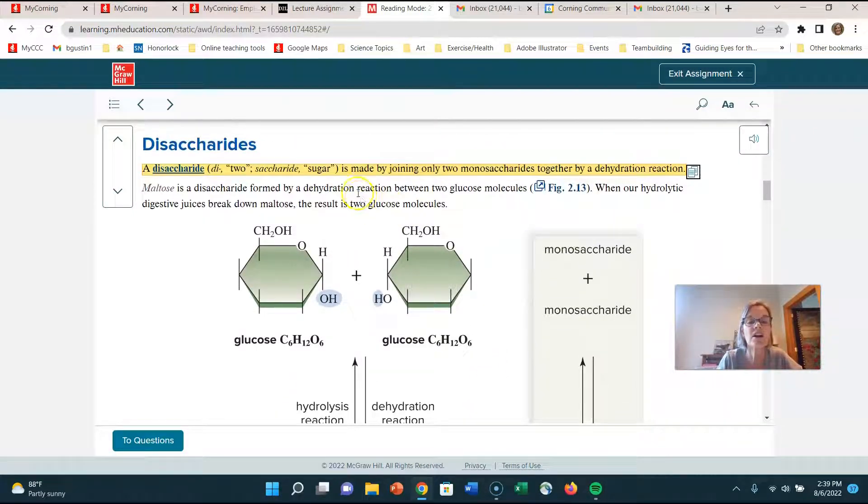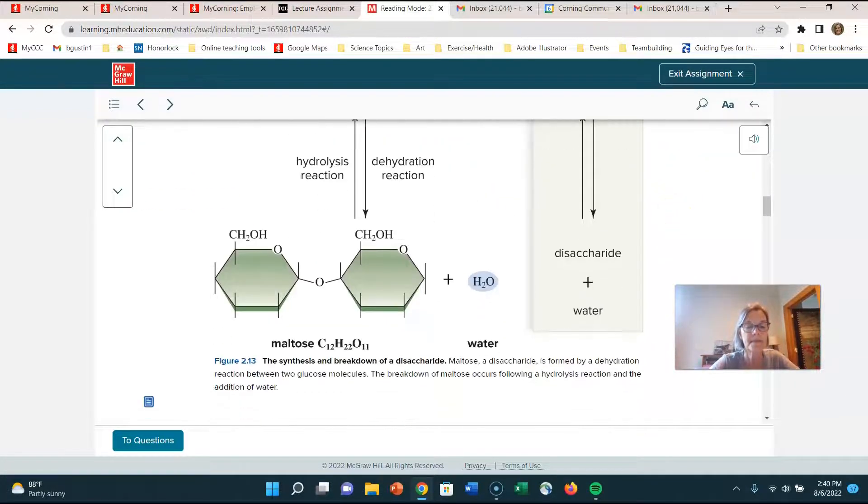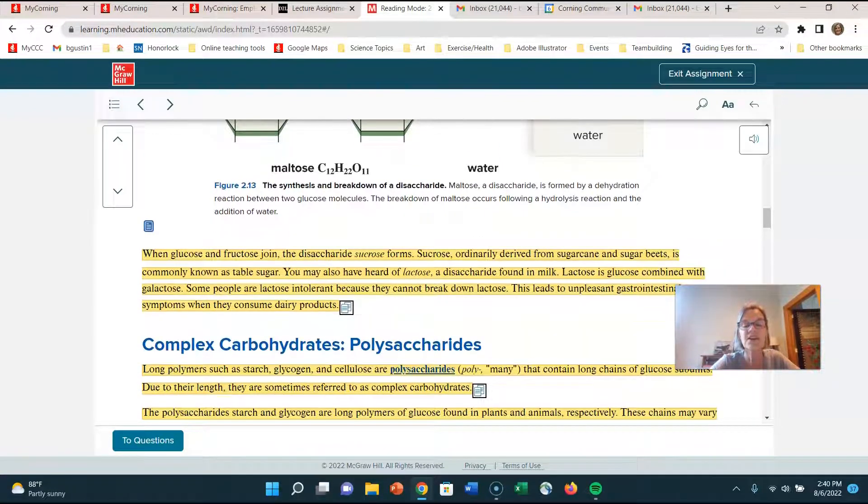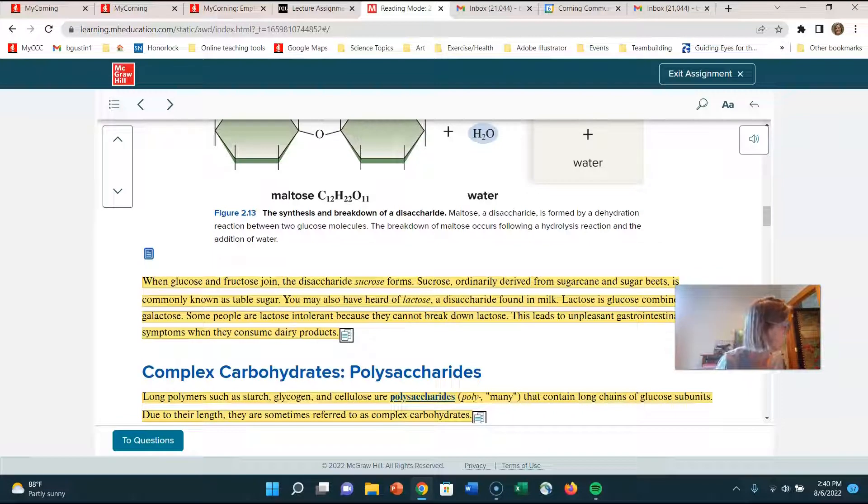So disaccharides are made by joining two monosaccharides together in a dehydration reaction. And this one just happens, they happen to show you the example of maltose. Now here's one, a disaccharide that you have heard about, and it is on your list. And so I want you to remember this. It says when glucose and fructose join together, the disaccharide is called sucrose and you know, sucrose as ordinary table sugar. There's a high amount of sucrose in sugar cane and sugar beets, but you're most familiar with sucrose as table sugar. So it has glucose and fructose in it.